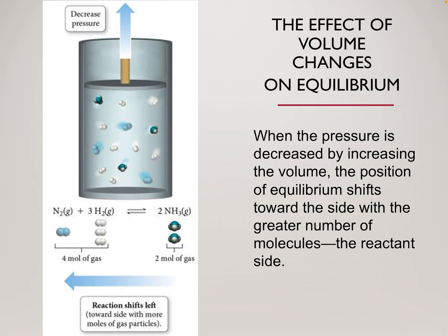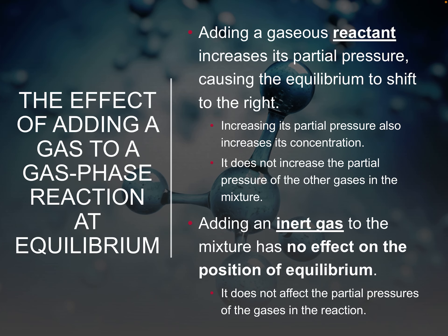The opposite is also true. If we decrease the pressure by increasing the volume, now there's lots of space. So we can shift to the side with more moles of gas because there's more room for those gas molecules. There were four moles on the reactant side and two on the product side, so when we decrease pressure by increasing volume, we shift to the side with more gaseous moles — that's the reactant side.